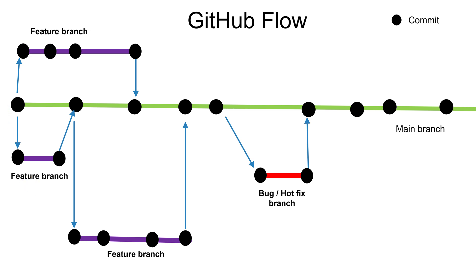In that feature branch, you are free to make any changes, free to do mistakes, free to revert back those changes, and free to test. You can do everything in the feature branch. Whatever you do in the feature branch is isolated and will have no impact on the main branch. Once the testing looks good, you can create a pull request to merge changes to the main branch. Once the pull request is approved, you can merge these changes to the main branch.